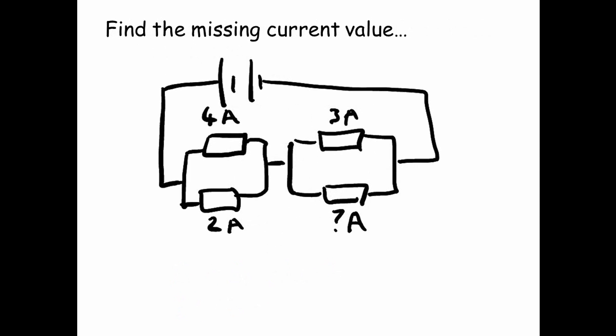Find the missing current value. Well, we've got 4 amps and 2 amps going through the resistors on the left hand side, so that current is going to combine to make 6 amps. 3 of those amps goes through the top resistor. The remaining, it's going to be 3 plus something equals 6, which gives us 3 amps.